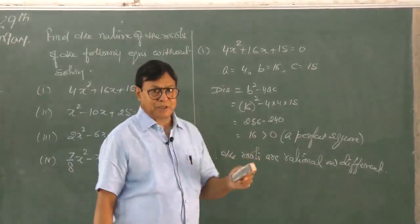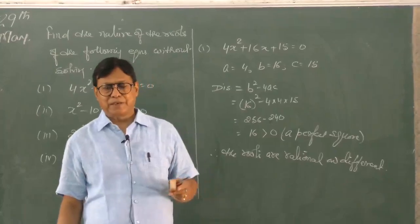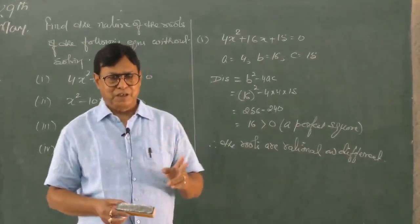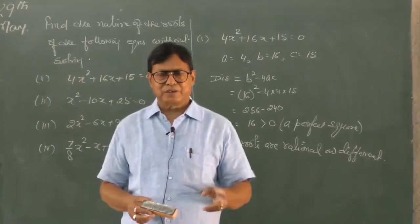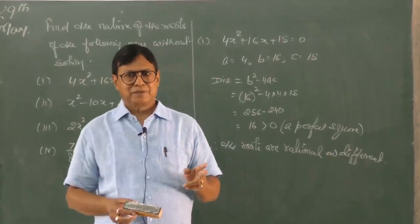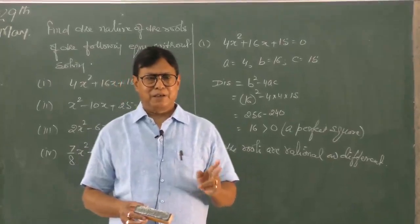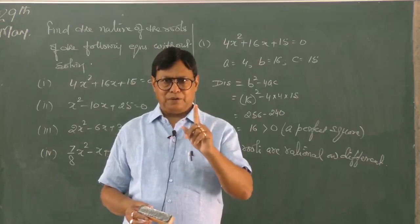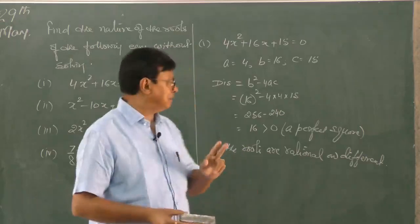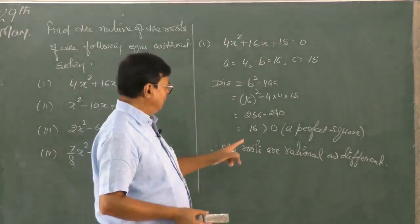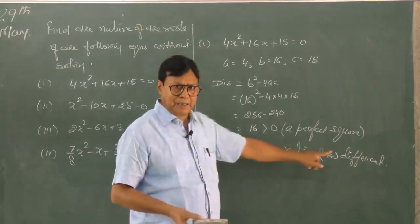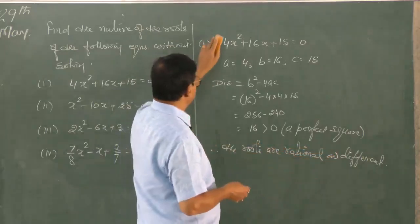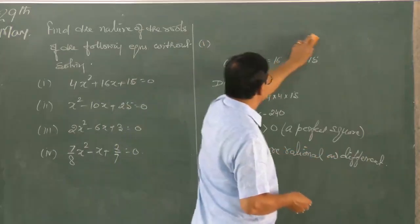One thing to keep in mind: you have to write both the characteristics — real or imaginary or complex, real and equal — not only one characteristic. You have to write both, so rational and different, both. Then I move to the next sum.